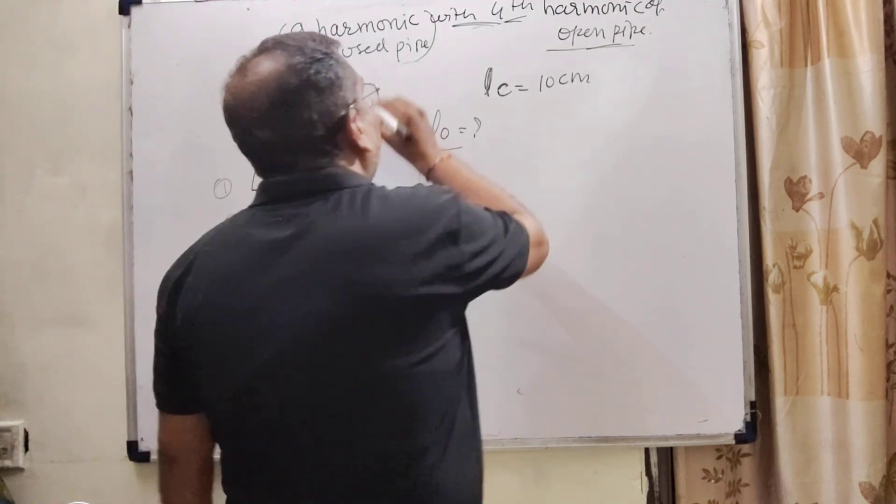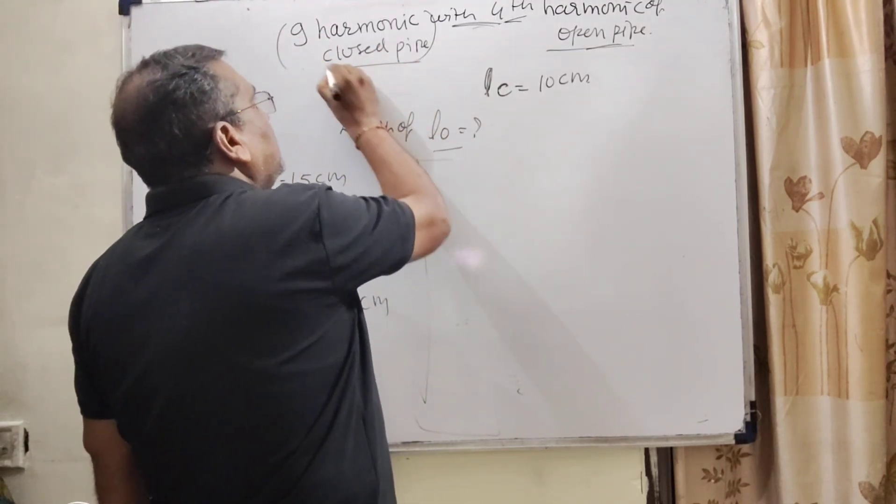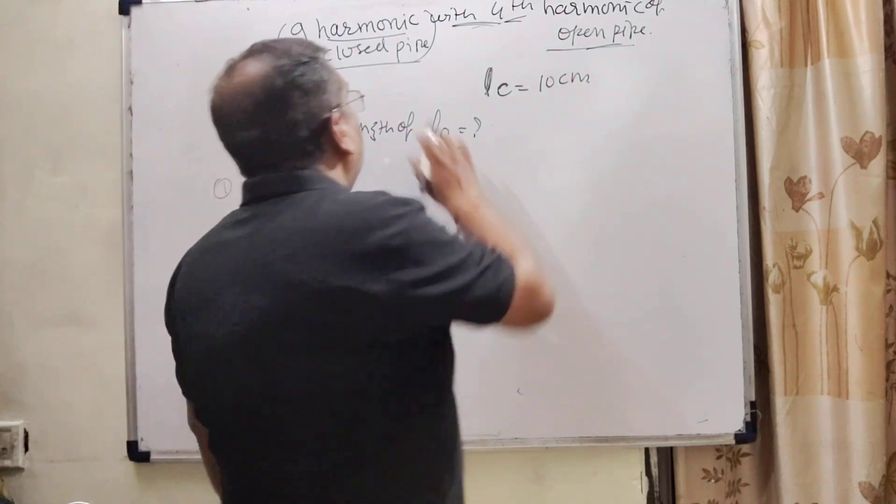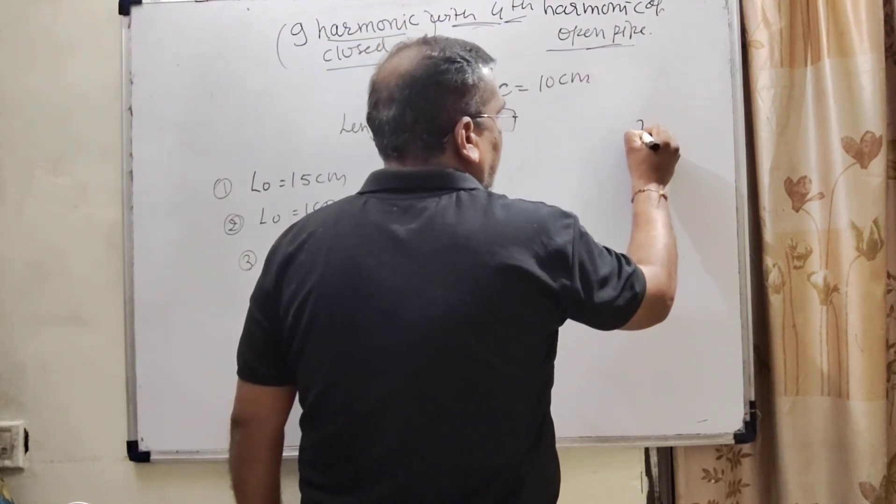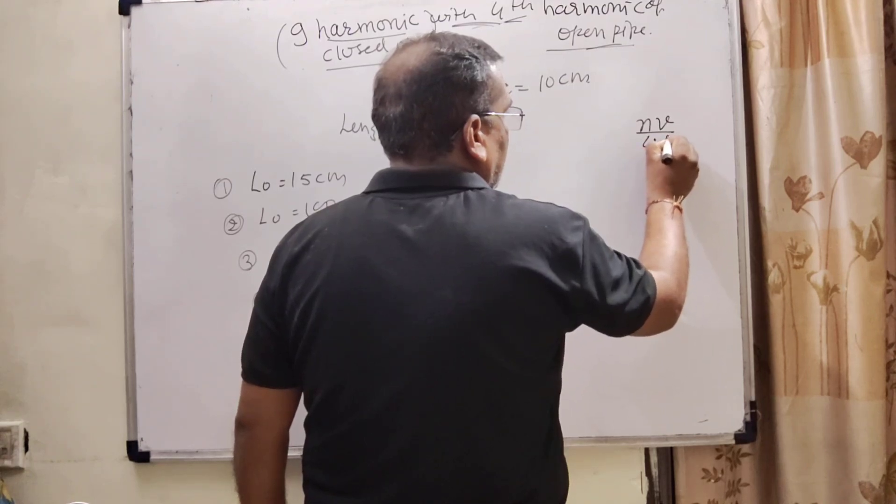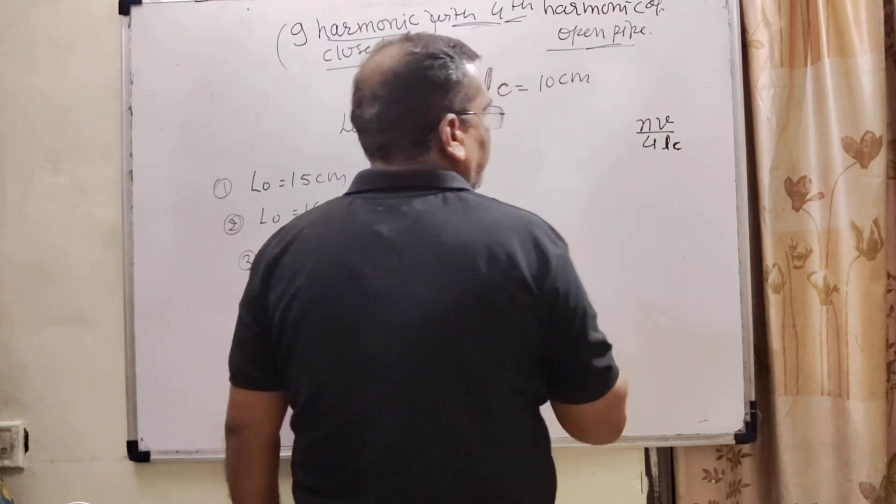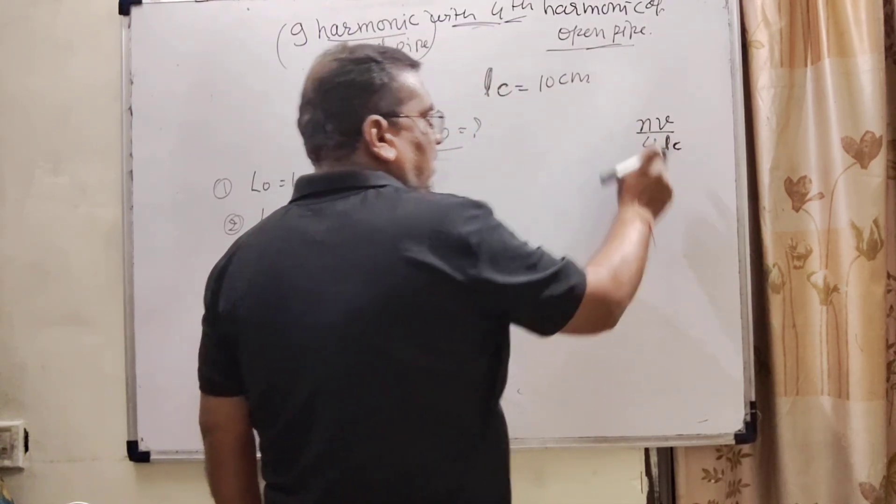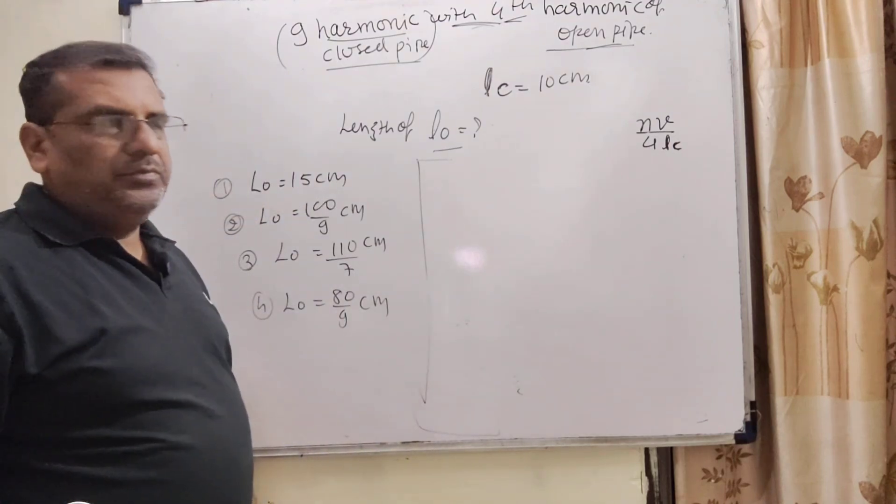So, let us first understand what is the meaning of harmonic. For the closed pipe, we use the formula NV/4L for the closed pipe. Here N, the product of N, that means the harmonic.